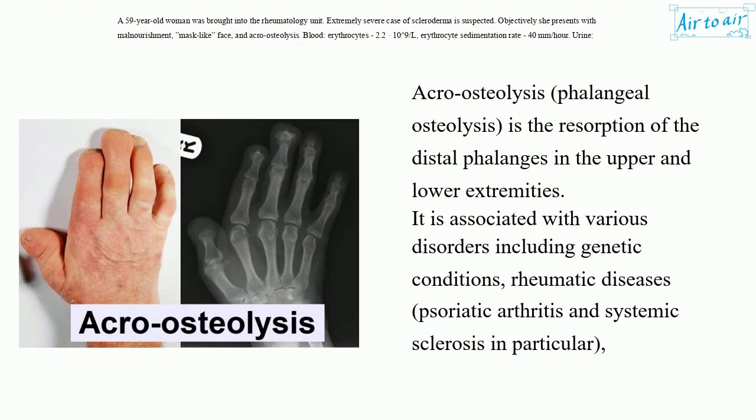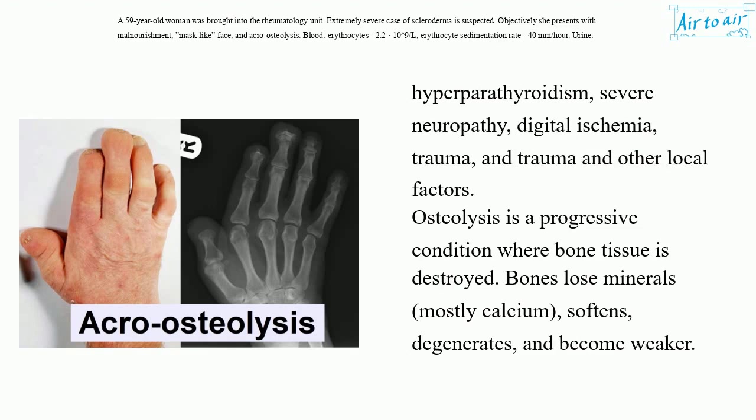Acroosteolysis: phalangeal osteolysis is the resorption of the distal phalanges in the upper and lower extremities. It is associated with various disorders including genetic conditions, rheumatic diseases, psoriatic arthritis and systemic sclerosis in particular, hyperparathyroidism, severe neuropathy, digital ischemia, and trauma. Osteolysis is a progressive condition where bone tissue is destroyed — bones lose minerals, mostly calcium, soften, degenerate, and become weaker.